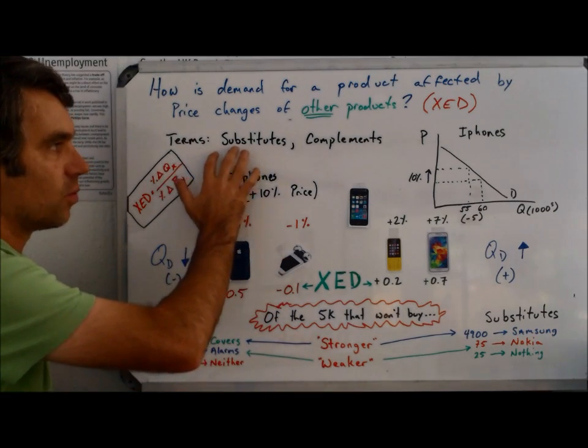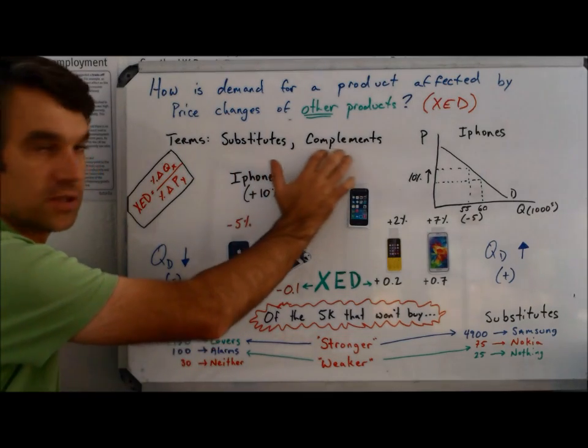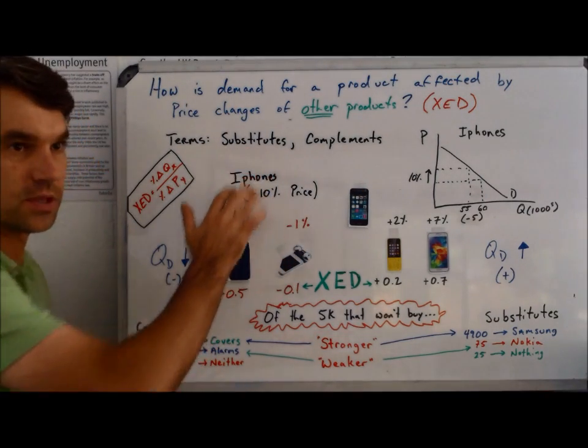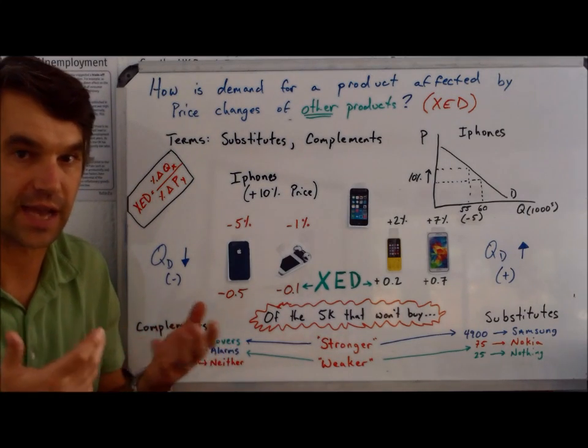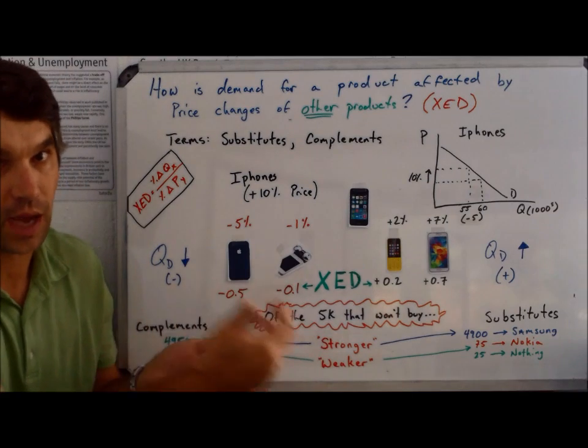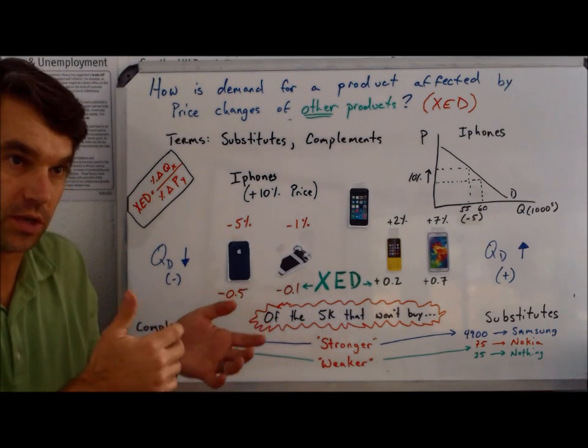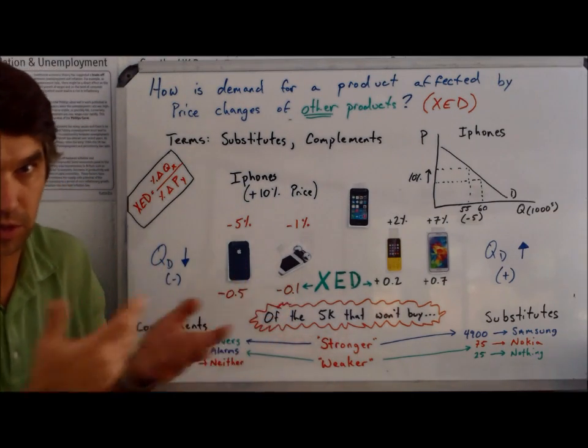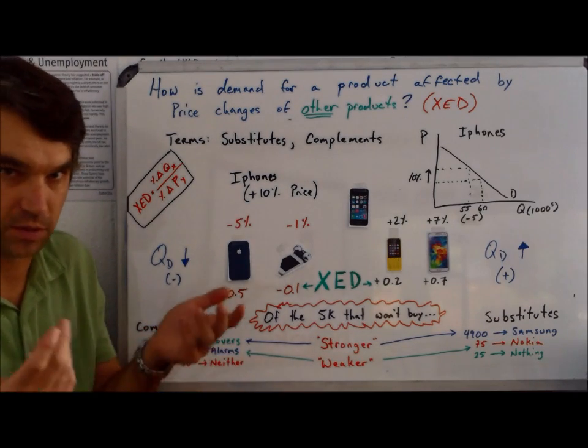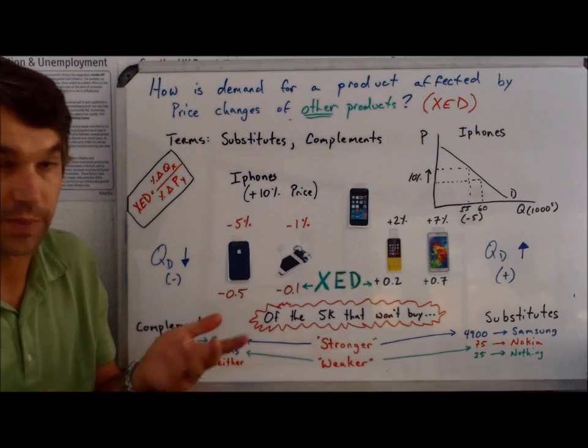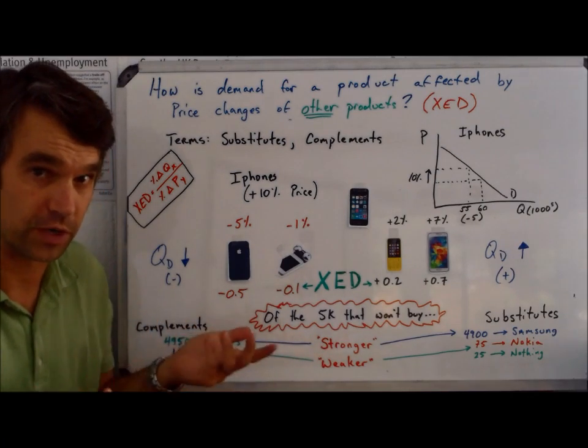The terms that we care about here are substitutes and complements. A substitute is a good that you're going to use in the exact same way as the good you're talking about. A complement is a good that you're going to use along with the good you're talking about. So ketchup is a complement to french fries, but maybe onion rings are a substitute for french fries.